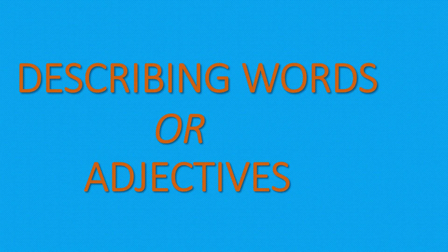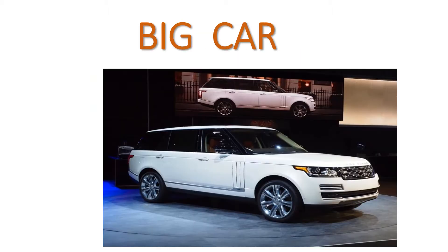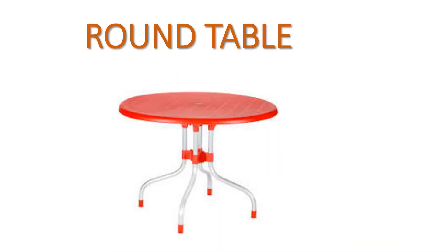For example: yellow butterfly. What color is here? Yellow. Next is big car. What size is big? Big. Then round table. Here, the table shape is round.